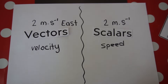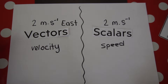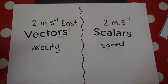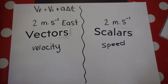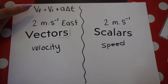Some learners get confused because they think speed and velocity are completely different things. The magnitudes are the same — if my speed is two meters per second, my velocity could also be two meters per second east. When quoting velocity, I'm giving a little bit more information by including the direction.